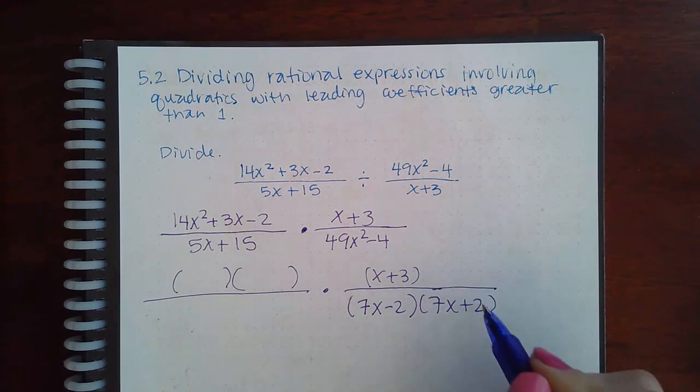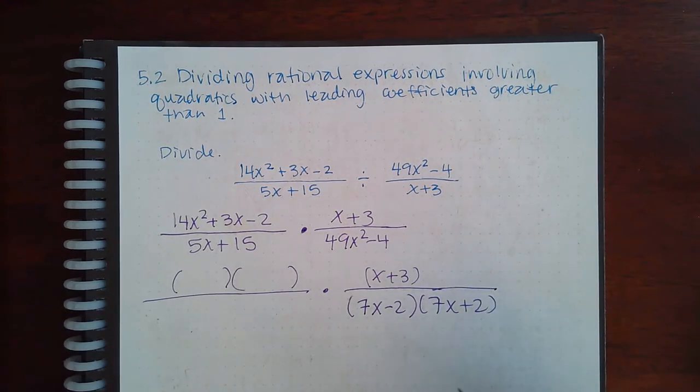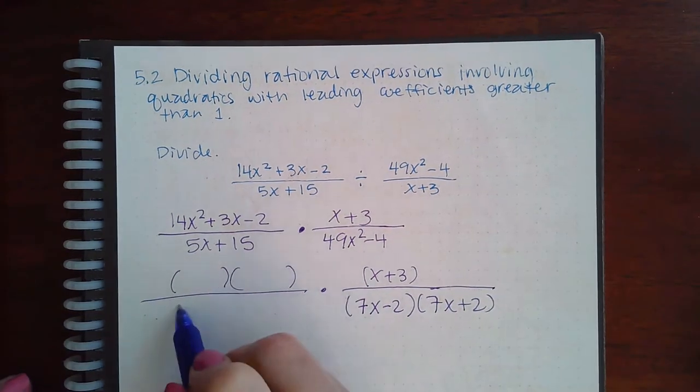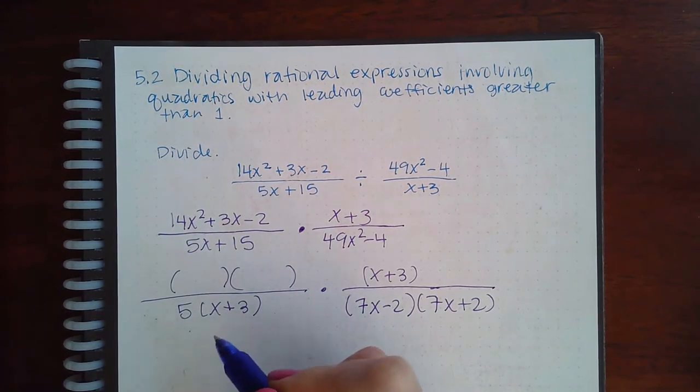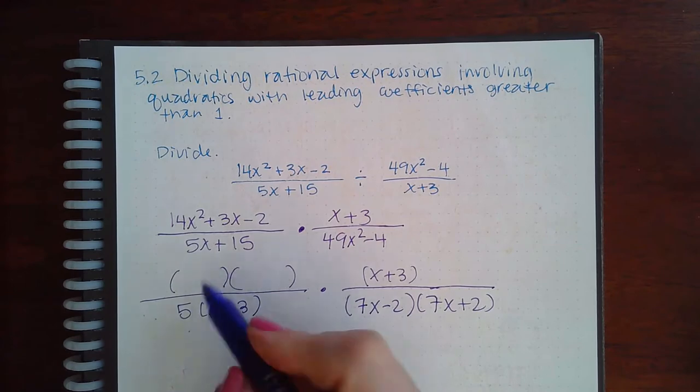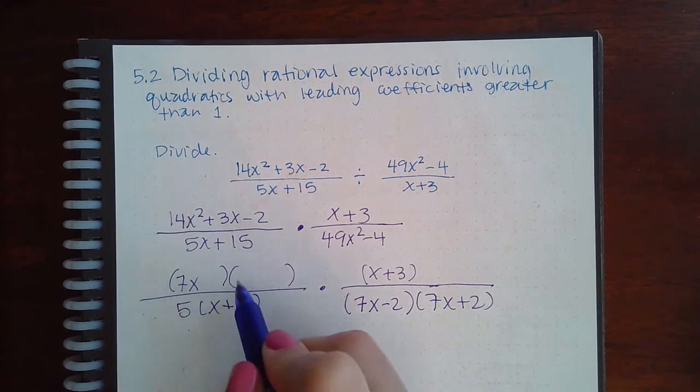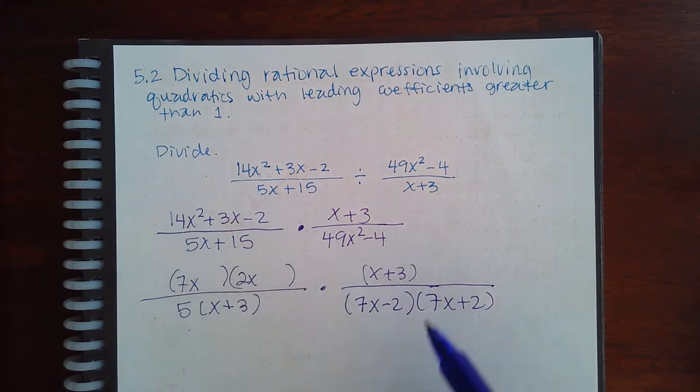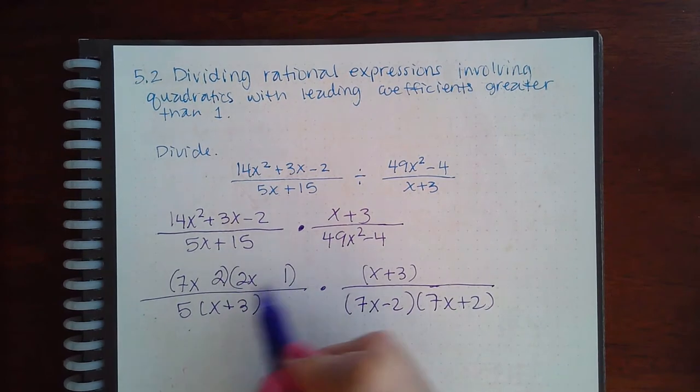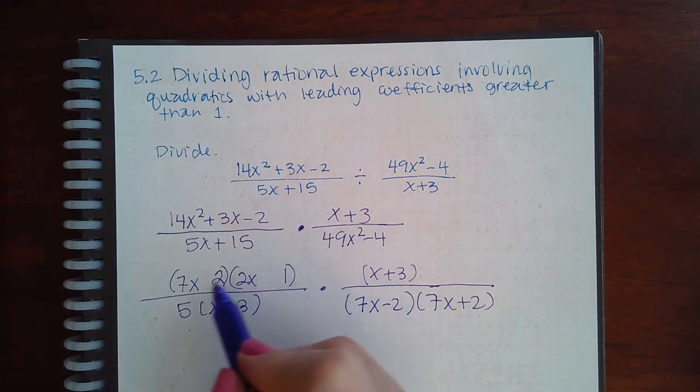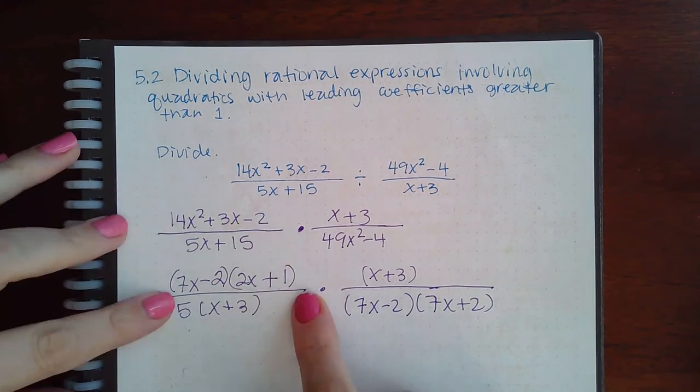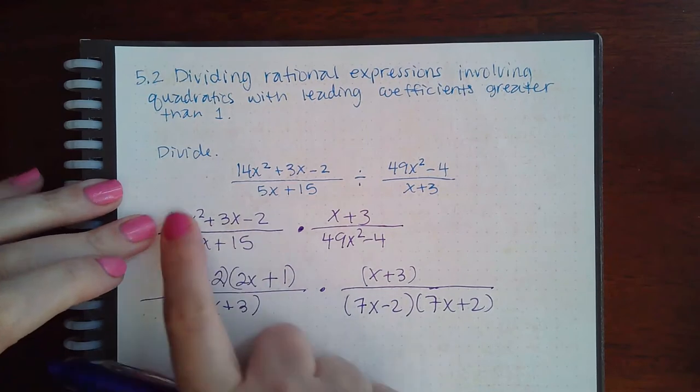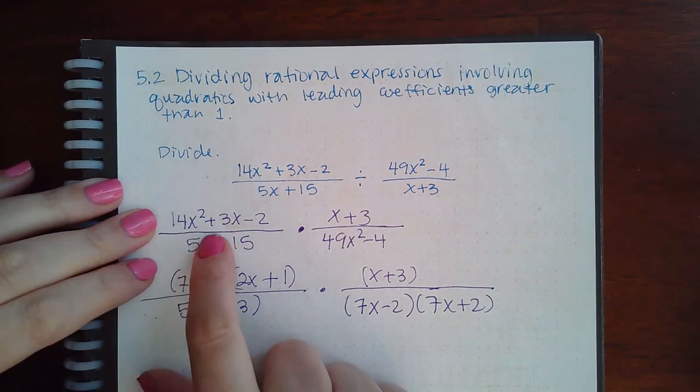And then here would be 5 and x plus 3, here would be 7x, 2x, 2, 1, positive and negative. And again if you're not great at factoring trinomials with the number in front, you do have the AC method to fall back on.